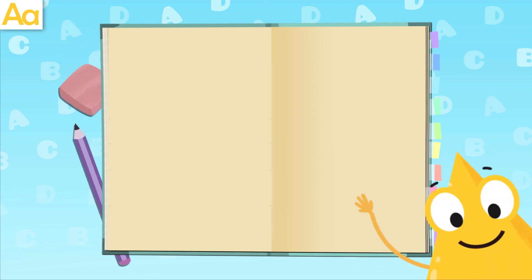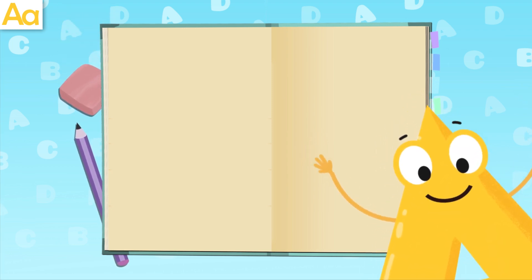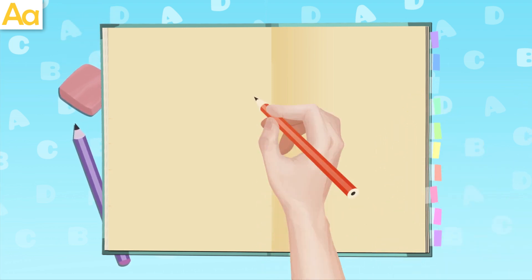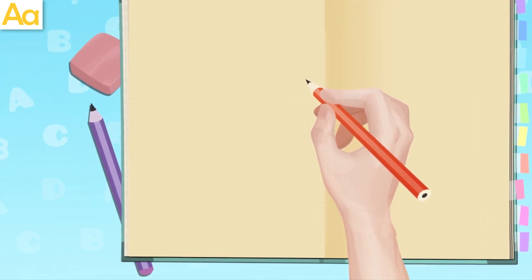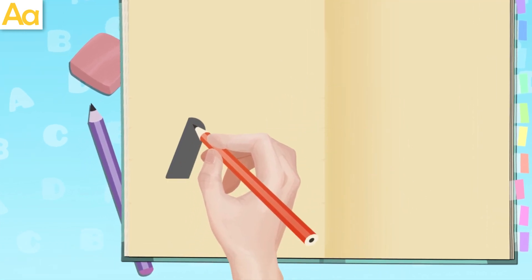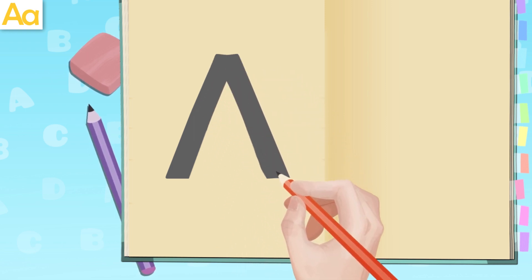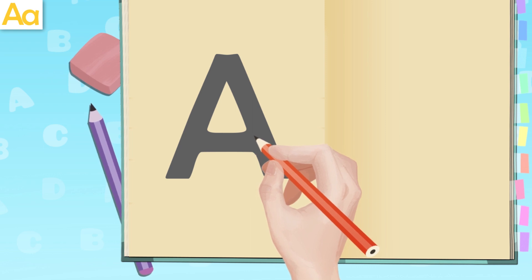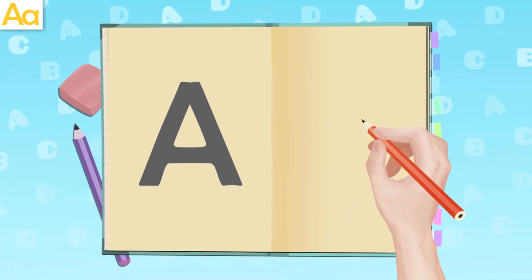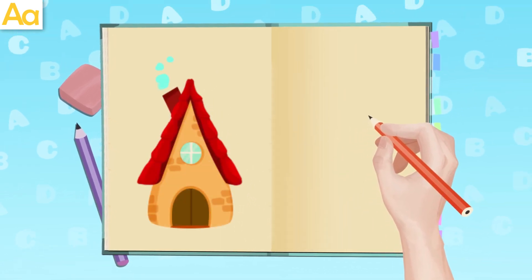You can also write with me whenever you like. I can show you. Let's start with a capital letter — it's easier. We draw one little stick this way, another that way, and right in the middle we join them together. Good job! Look, it's like a house.